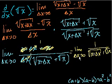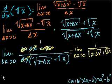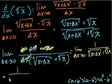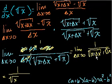Now we can just directly take the limit as Δx approaches 0 — we can just set Δx equal to 0, that's what it's approaching. So that equals 1 over √x, since Δx is 0 and we can ignore it.